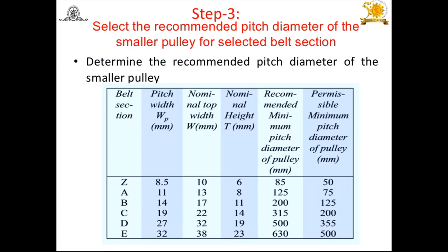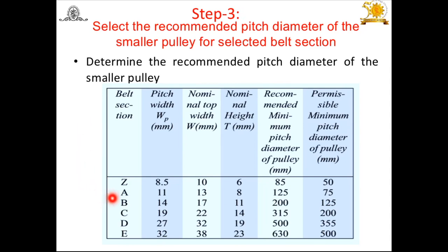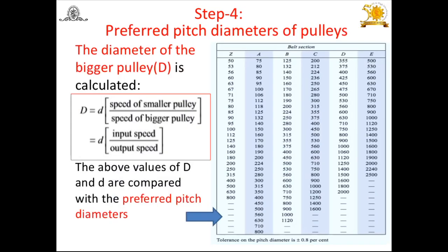Step 3: After selecting the belt cross-section, we select the recommended pitch diameter of the smaller pulley. For example, if section B is selected, the recommended pitch circle diameter of the smaller pulley is 200 mm, so small d = 200 mm. This value is obtained by referring to the standard table for recommended pitch diameters.